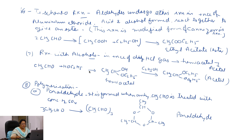The next reaction is the reaction with alcohols. In the presence of dry HCl gas, first of all a hemiacetal is formed. When it further reacts with ethyl alcohol, then we get an acetal.